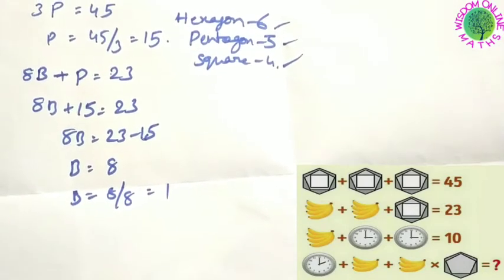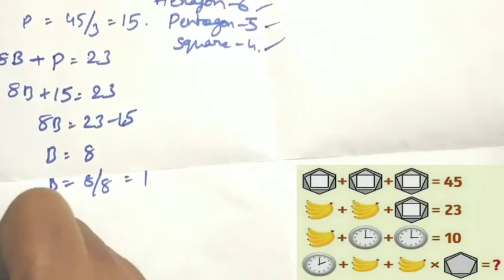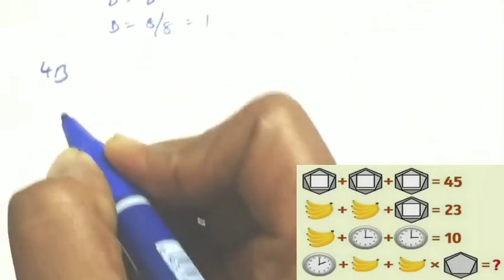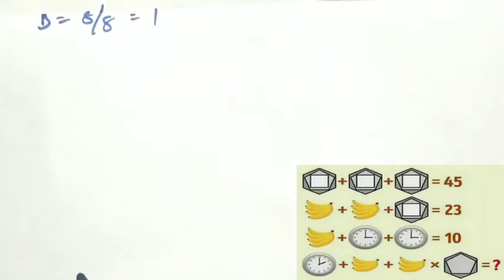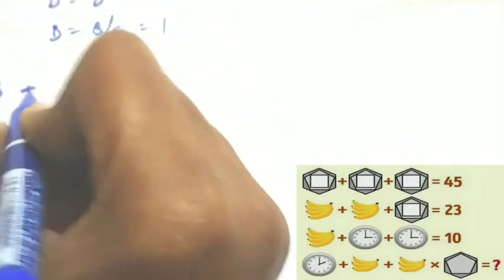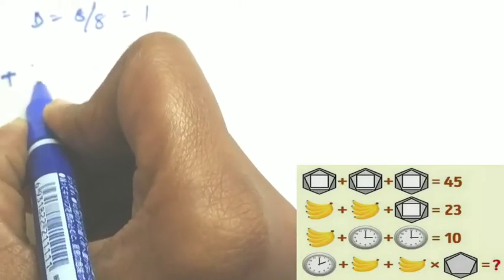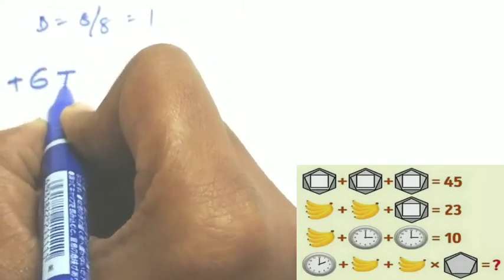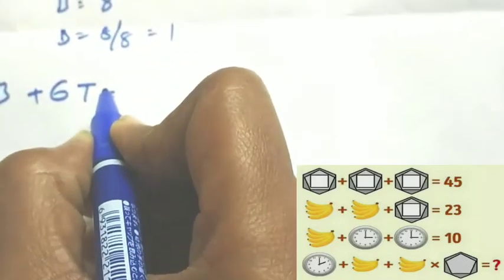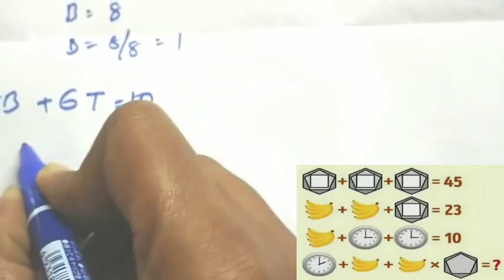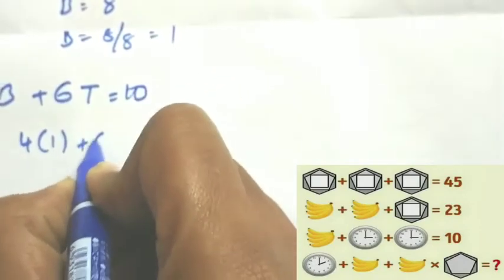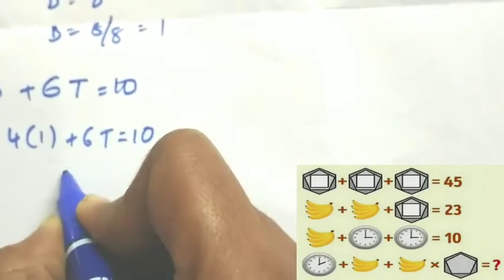Next, see the third line - four bananas are there, plus time value. In the clock it is showing three, so three plus three, totally six, plus four bananas is equal to 10 they given. Four banana value is one, substitute: 4 plus 2T is equal to 10.